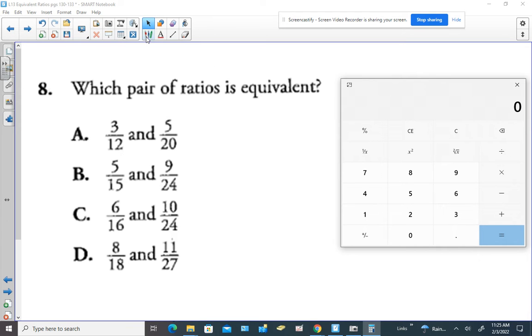Probably your best approach on this, especially if you have a calculator, is to just check your cross products and see which pair give you equal cross products.